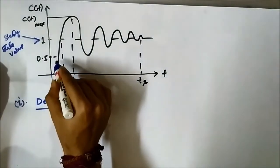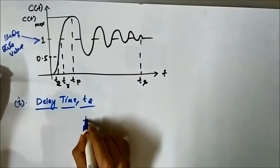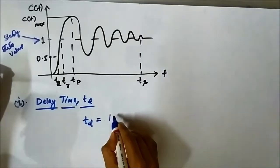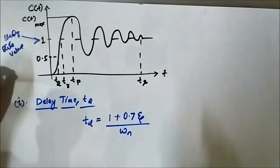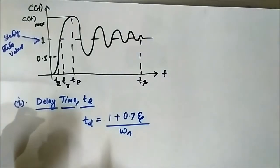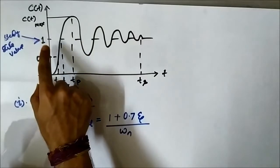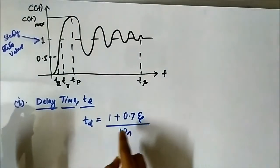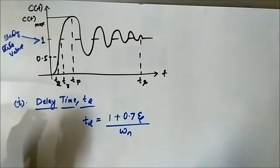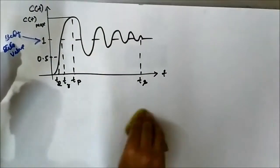This time instant is called the delay time. Mathematically, the expression for delay time is (1 + 0.7ζ) / ωn, where ζ is the damping ratio and ωn is the natural frequency of oscillation. So the delay time is the time at which the output first reaches 50% of the steady state value.